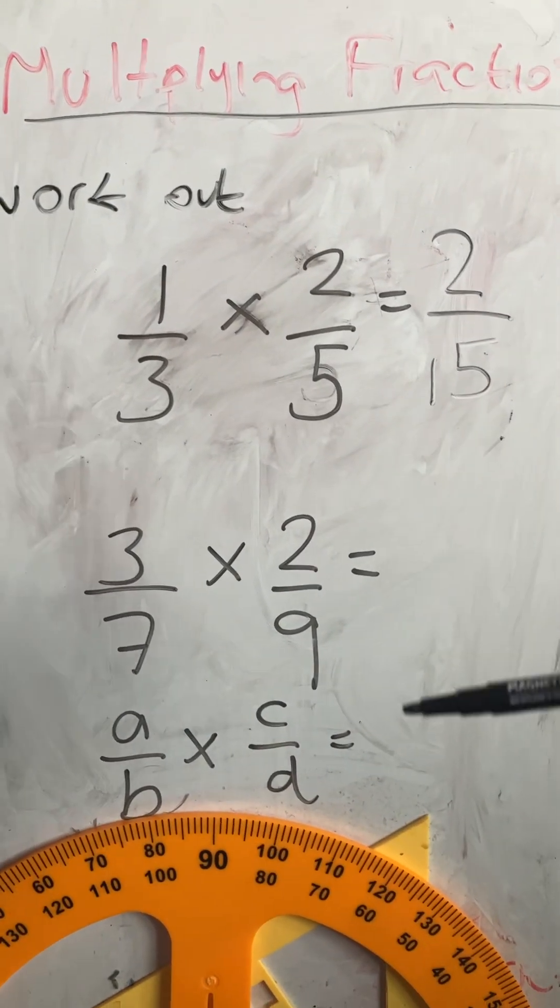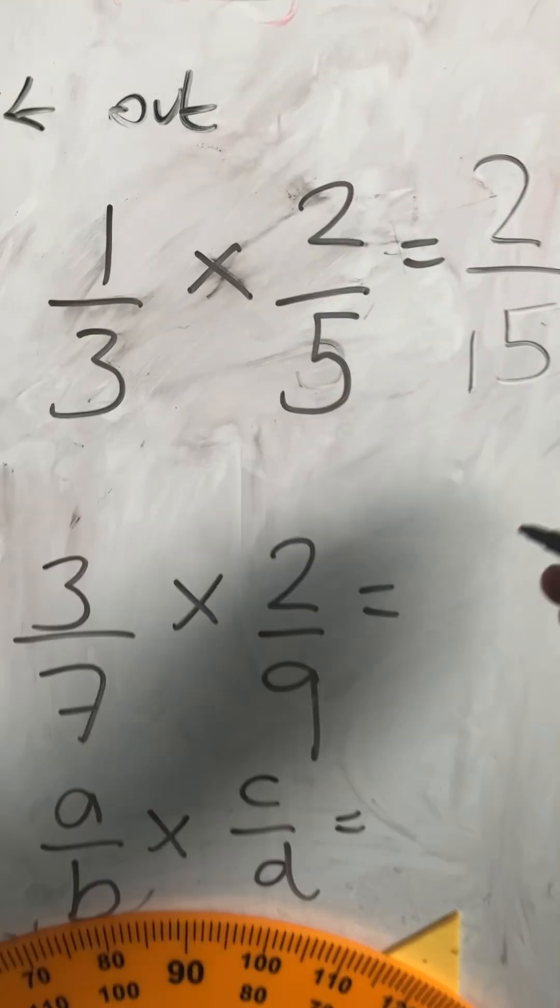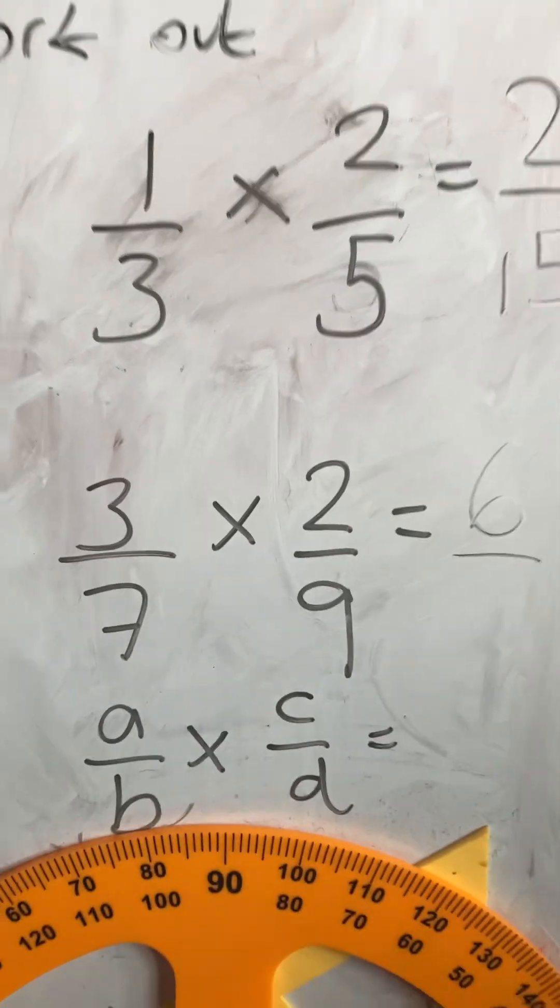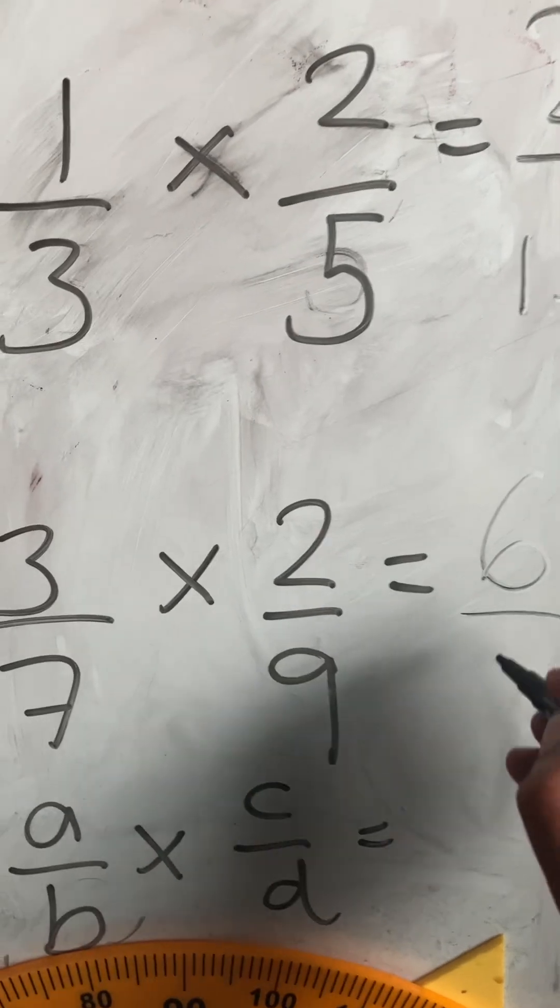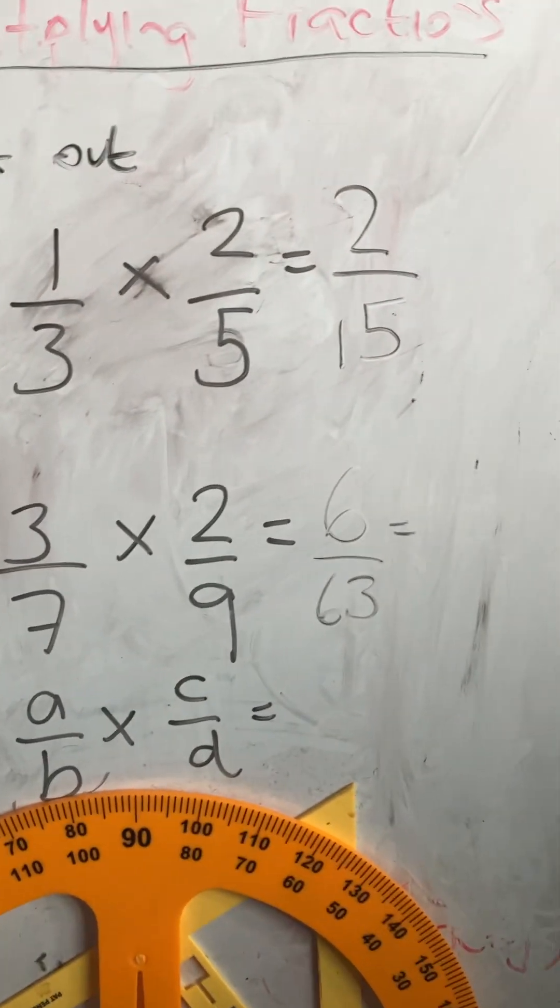This next one, 3 sevenths times 2 ninths. 3 times 2 is 6, and 7 times 9 is 63, so 6 63rds.